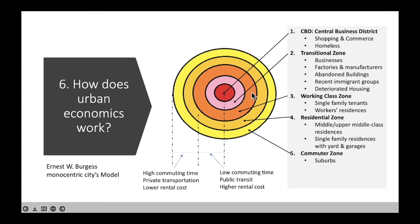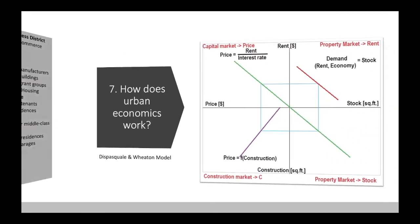Lower rents toward the edge of the circle, but high commuting time — meaning you're going to spend a lot of time commuting or use your private car. There's a balance that needs to be made. To summarize: the monocentric model is the model of the city where the central business district is at the center, and the further you go from the center, rent costs decrease while commuting time increases.